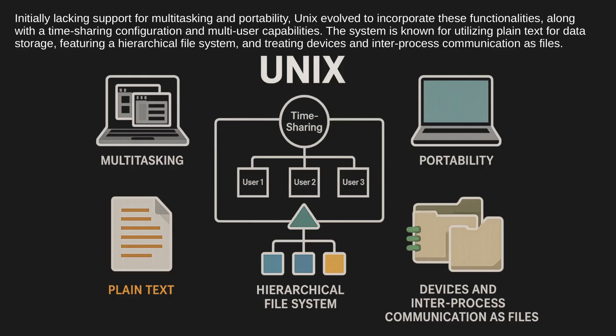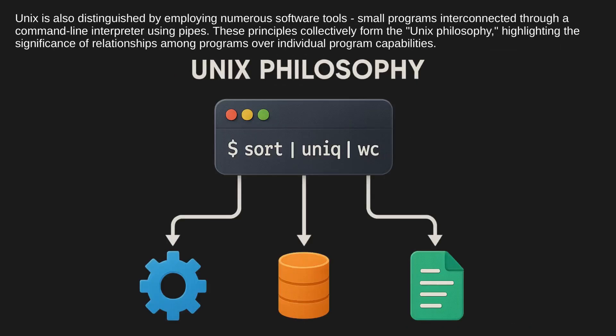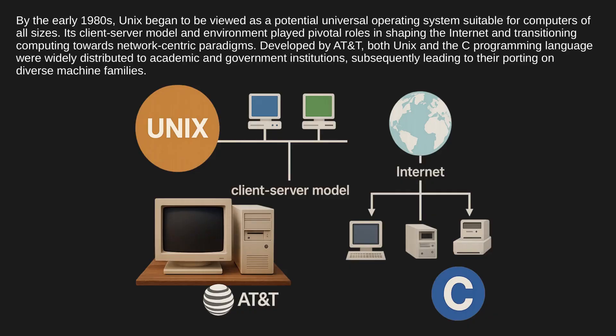The system is known for utilizing plain text for data storage, featuring a hierarchical file system, and treating devices and inter-process communication as files. Unix is also distinguished by employing numerous small software tools interconnected through a command line interpreter using pipes.